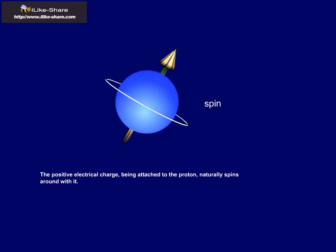The positive electrical charge, being attached to the proton, naturally spins around with it. And what is a moving electrical charge? It is an electrical current.